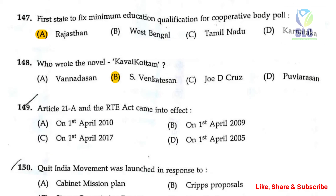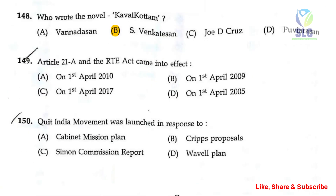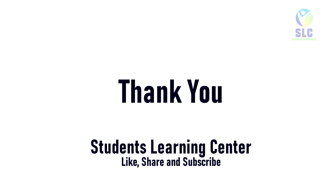The next question: Article 21A and the RTE Act came into effect. The correct answer is option A — on 1st April 2010. The next question: the Quit India Movement was launched in response to — the correct answer is option B, the Cripps Proposal. All the best for your preparation. If you like this video, please like, share with your friends, and subscribe.